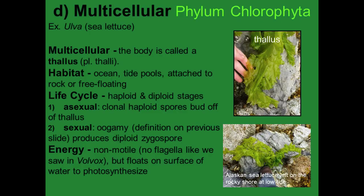A multicellular Chlorophyta is Ulva, or sea lettuce — multicellular, so the body is called a thallus, which you'll need to remember for future labs. Its habitat is the ocean, typically in tide pools attached to rocks or free-floating. Asexually, clonal haploid spores bud off the thallus; sexually, oogamy produces a diploid zygospore. Non-motile with no flagella, it floats on the water surface using gas-filled parts to photosynthesize.